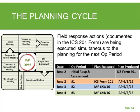At the very beginning, field response actions are documented in a form called the incident briefing form, the ICS-201. Those activities are executed simultaneously with planning for the next operational period. For example, if our incident started on June 2nd, we do our initial response and assessment and produce the ICS-201 form. On June 2nd, operational period one, we execute in the field the actions documented in our ICS-201, while we're producing an incident action plan for June 3rd. On the 3rd, operational period two, we execute the plan created on June 2nd, while producing a plan for June 4th. This is how the planning cycle works.